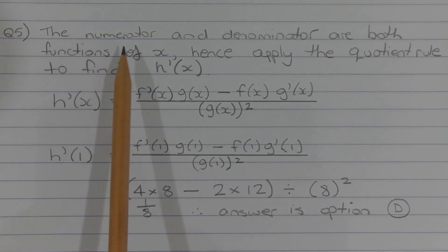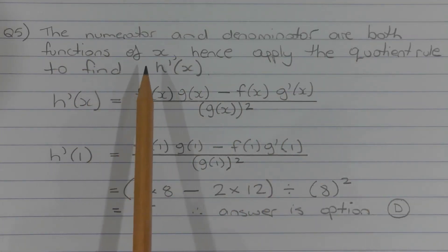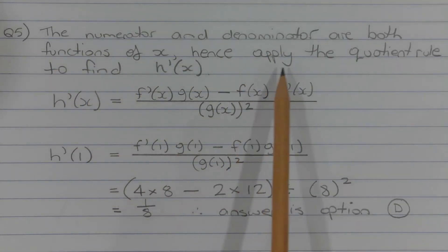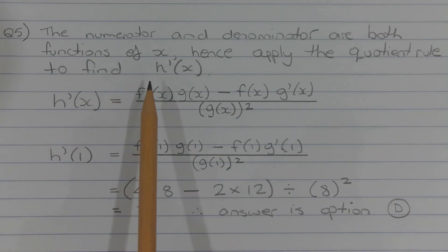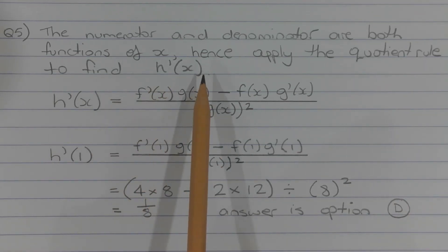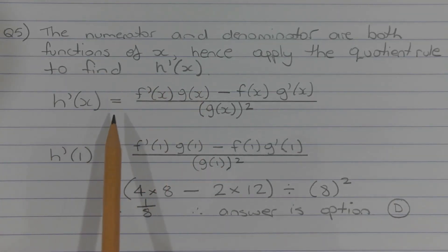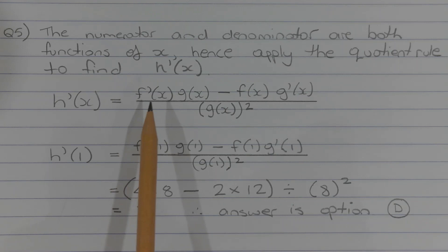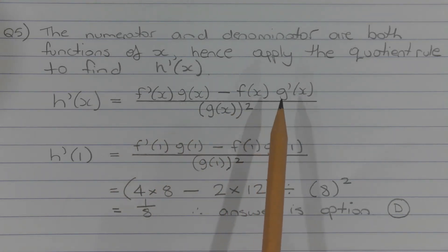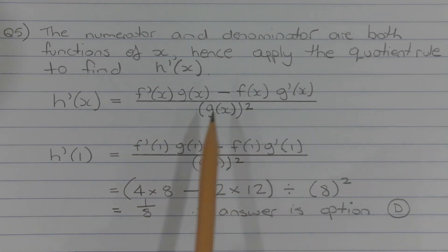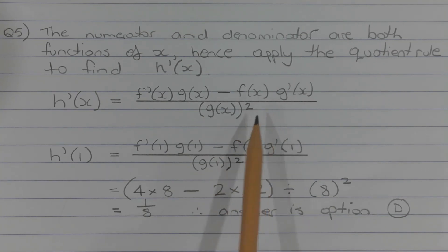The numerator and denominator are both functions of x, hence apply the quotient rule to find h dash of x. So h dash of x is equal to f dash of x times g of x minus f of x times g dash of x, over g of x all squared.